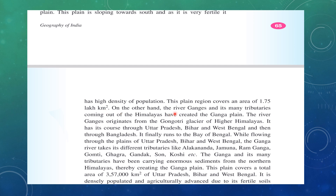River Ganga and its main tributaries, coming out of the Himalayas, have created the Ganga plain. River Ganga originates from the Gangotri Glacier in the higher Himalayas — this is a very important fact that may come as a question. It has its course through Uttar Pradesh, Bihar, and West Bengal, and then reaches Bangladesh, finally flowing into the Bay of Bengal.